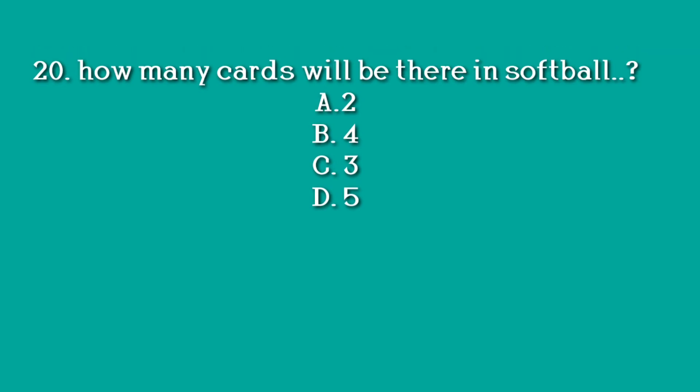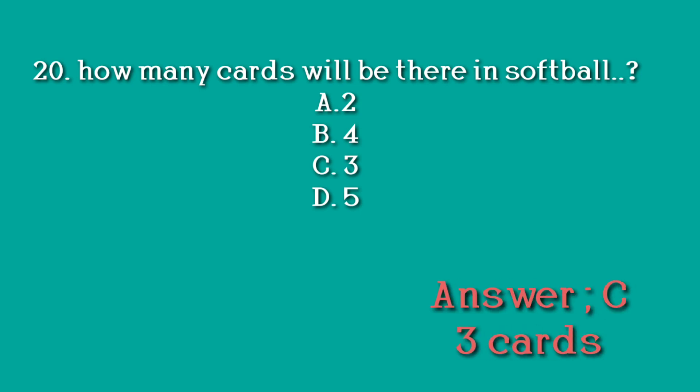Question number 20: How many cards will there be in softball? Option A. 2 cards. Option B. 4 cards. Option C. 3 cards. Option D. 5 cards. Answer: C. 3 cards.